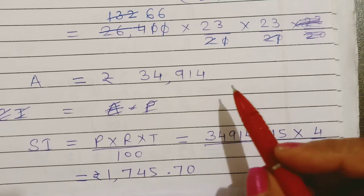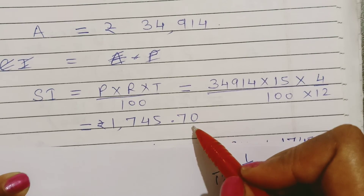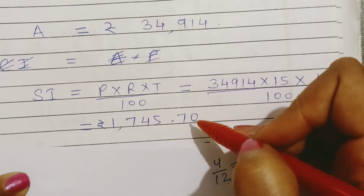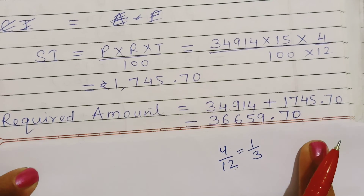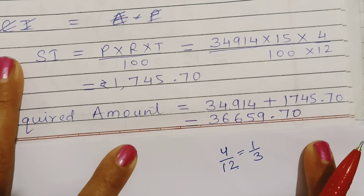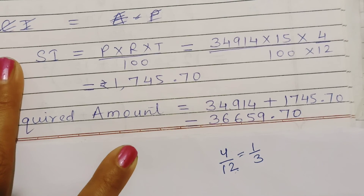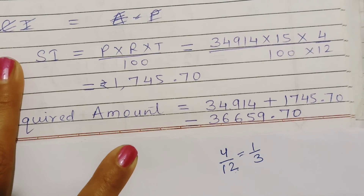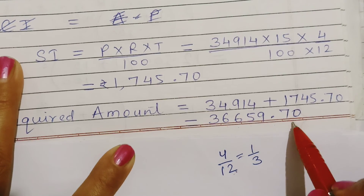एक amount यह आया है और एक interest यह आया है। इन दोनों को plus कर देंगे, तो required amount मिल जाएगा। Means उसने जो ₹26,400 का bank से loan लिया था, उसका total amount — 2 years 4 months में — ₹36,659.70 pay करना पड़ेगा।